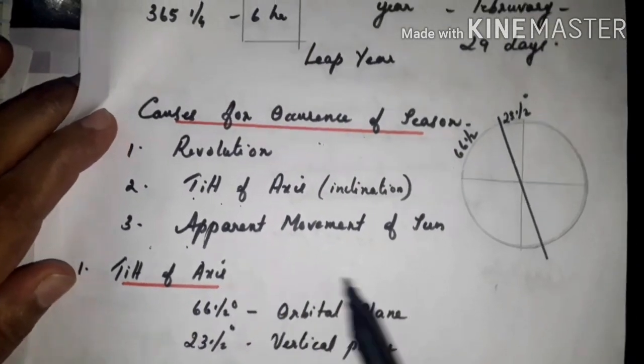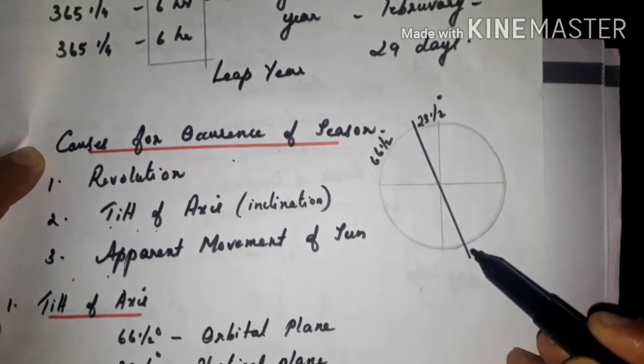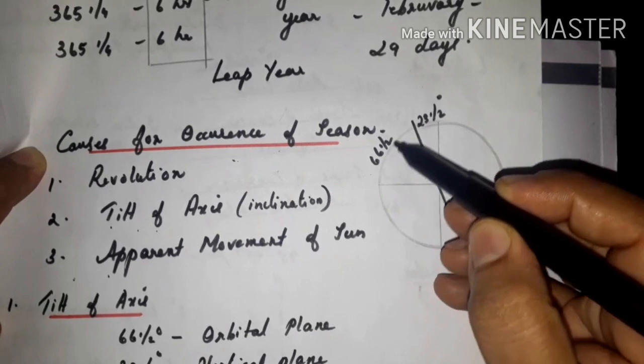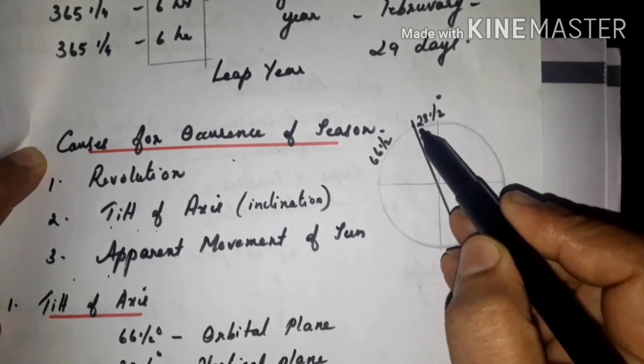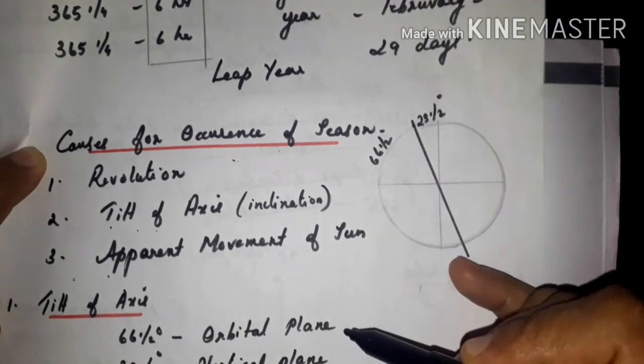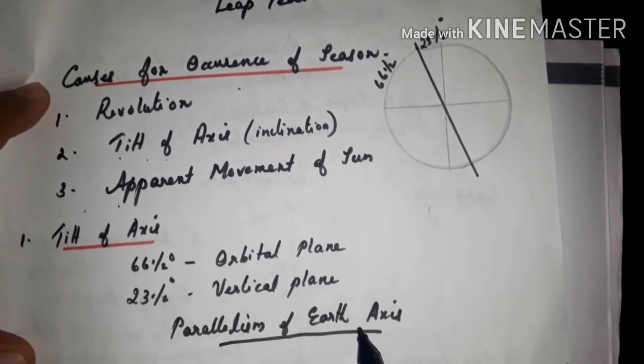Now first, tilt of axis. Earth is tilted at an angle of 66 and a half degree in the orbital plane, 23 and a half degree in the vertical plane. This is known as parallelism of Earth's axis.